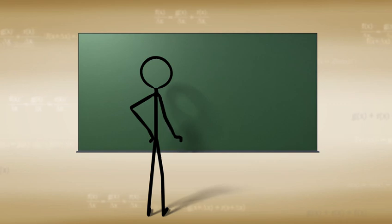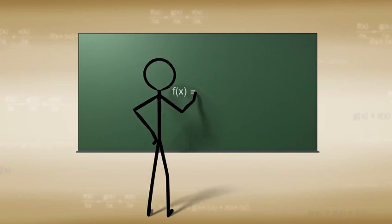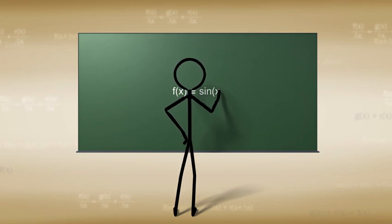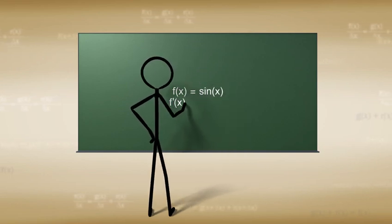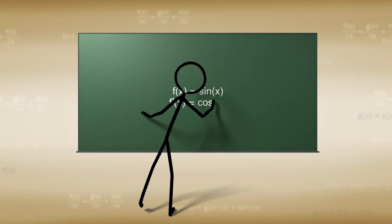Therefore, we can say that if f of x is equal to the sine of x, then the derivative of f of x is equal to the cosine of x.